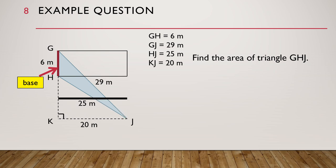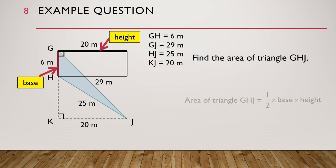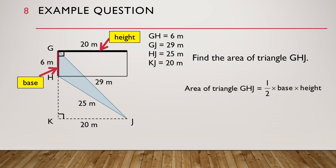If you cannot see, we can shift it up like this. So we can see that the height of the triangle is 20 meters. The area of triangle GHJ is equal to half times base times height, which is equal to half times 6 meters times 20 meters, and we get 60 square meters as the answer.